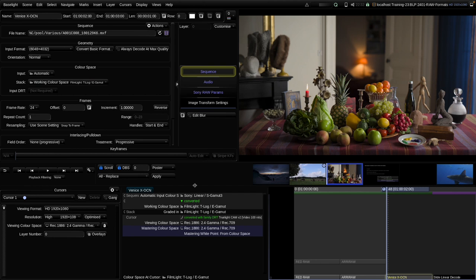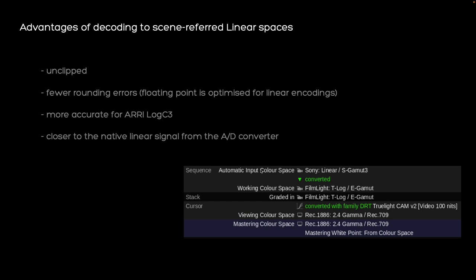There are no further options to decode directly to S-Log3. You might ask yourself why you're always decoding to linear scene-referred color spaces and not to log color spaces. There are various reasons. First, linear floating-point encodings are not clipped at any arbitrary limit - they are basically unclamped - and log encodings can have issues with that, especially with integer encodings. Baselight internally processes images mostly in floating-point numbers, and floating-point math is ideal for linear encodings, giving us fewer rounding errors and more precision.